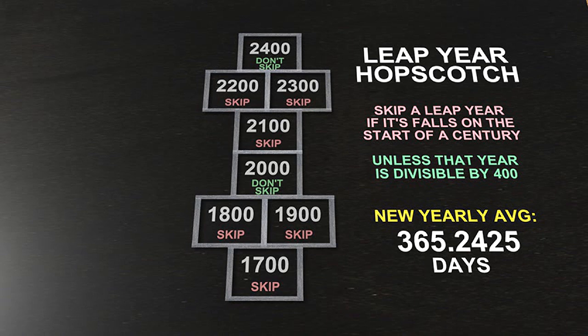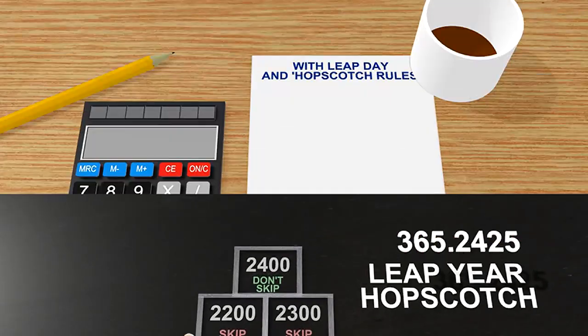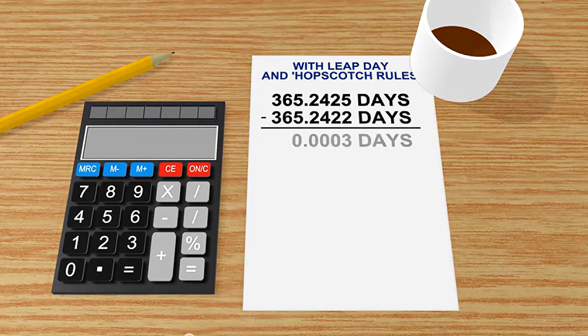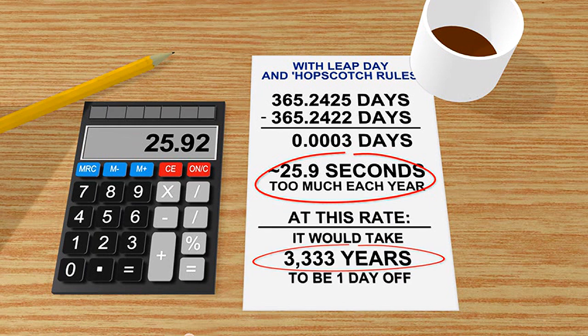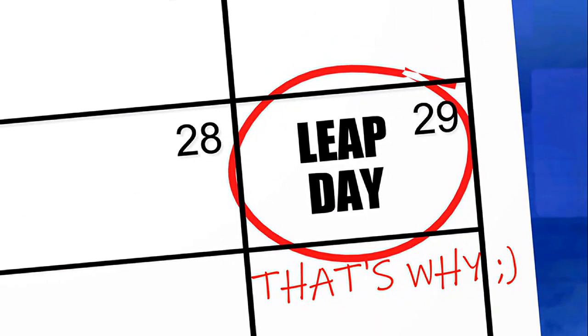So using these rules, the new yearly average is 365.2425 days per year. And that puts us off just 0.0003 days per year — about 26 seconds every year. At this rate, it would take 3,333 years to be off by just one day. And that is our Leap Day and Leap Year math.